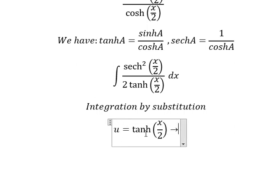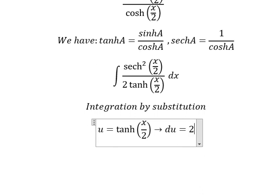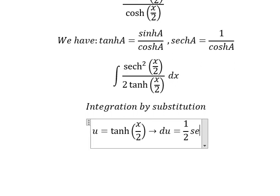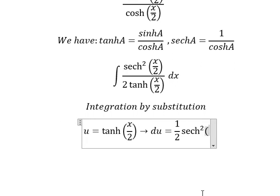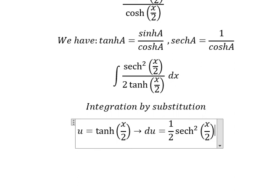So if we do the first derivative for both sides, we have one over two secant of x over 2 squared dx.